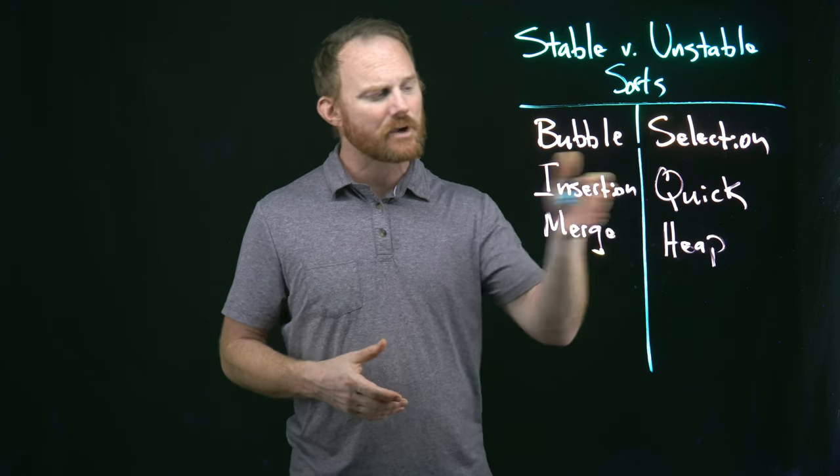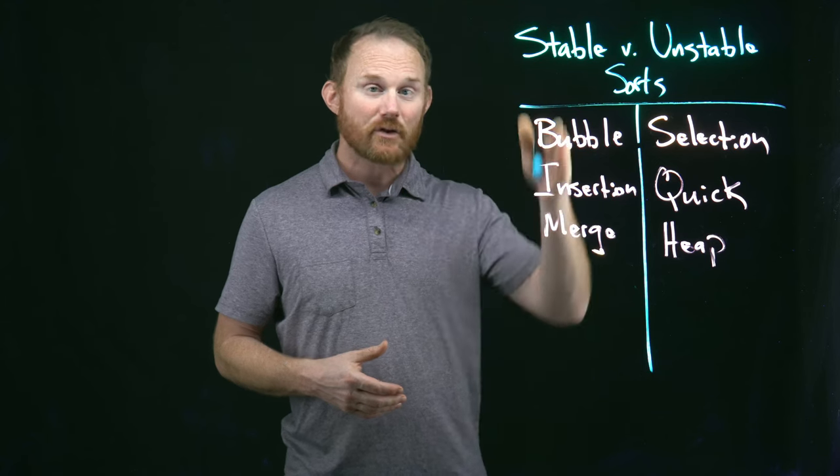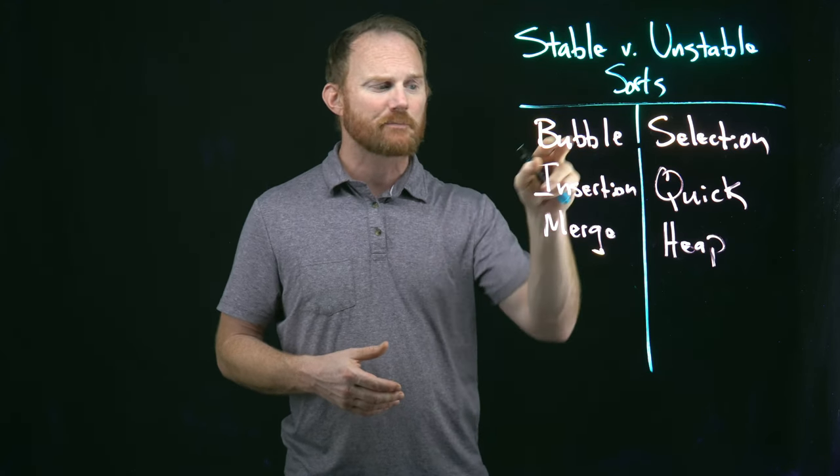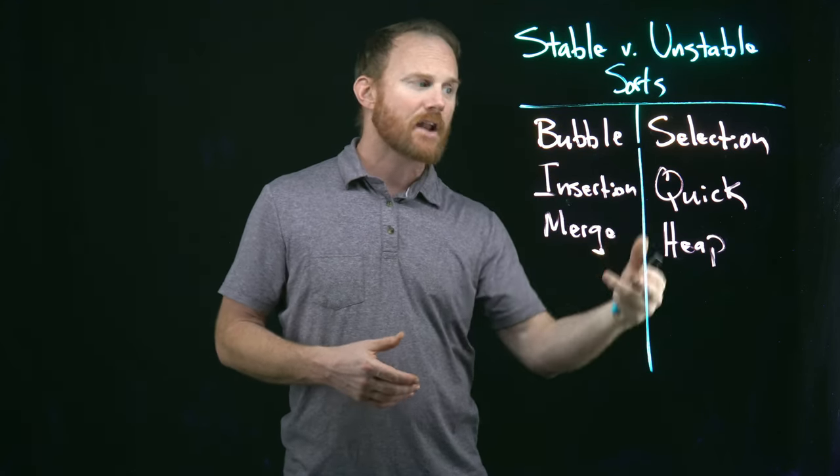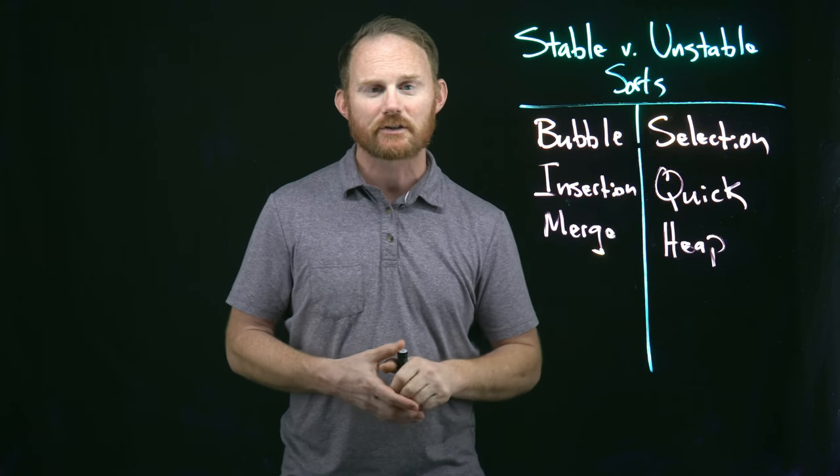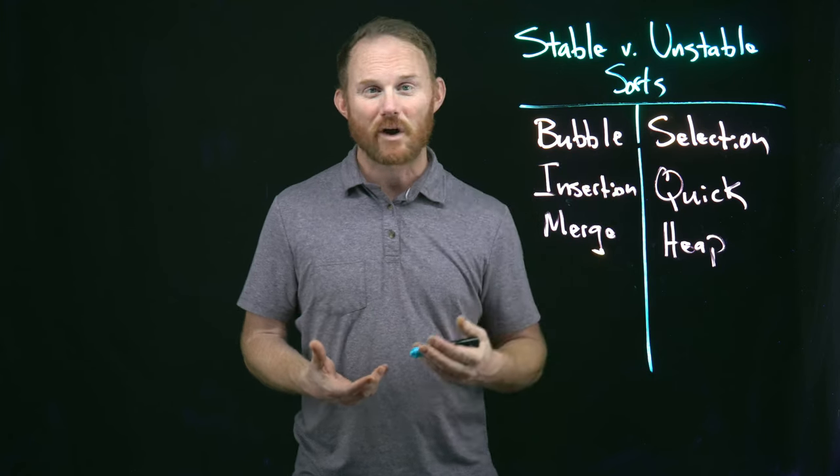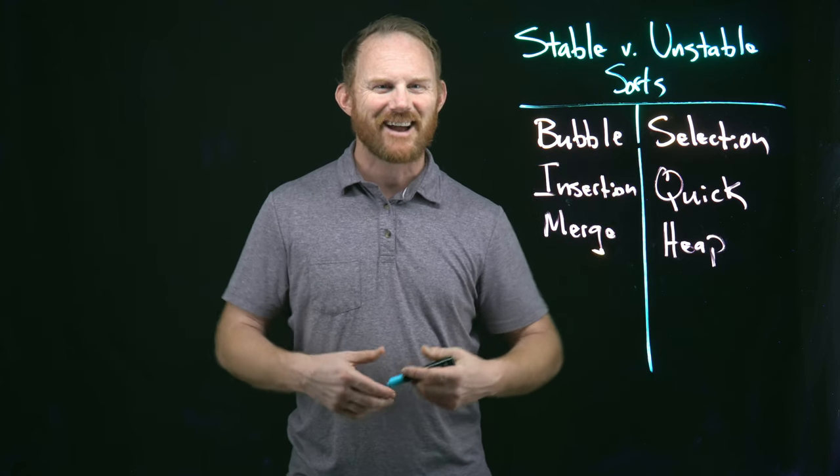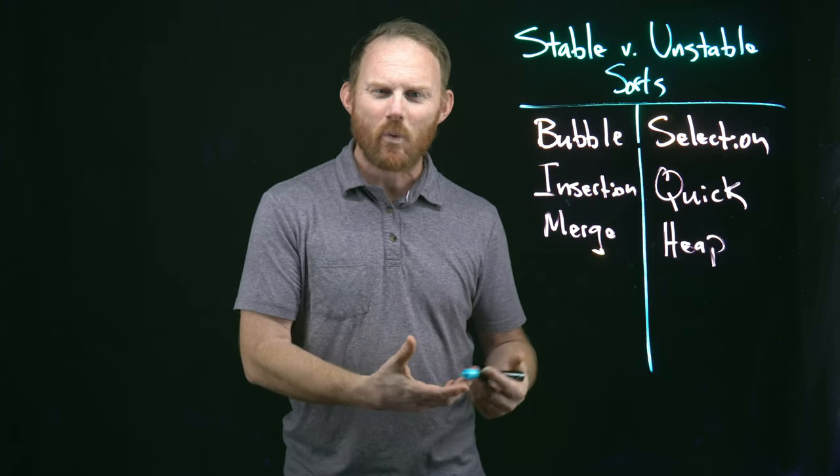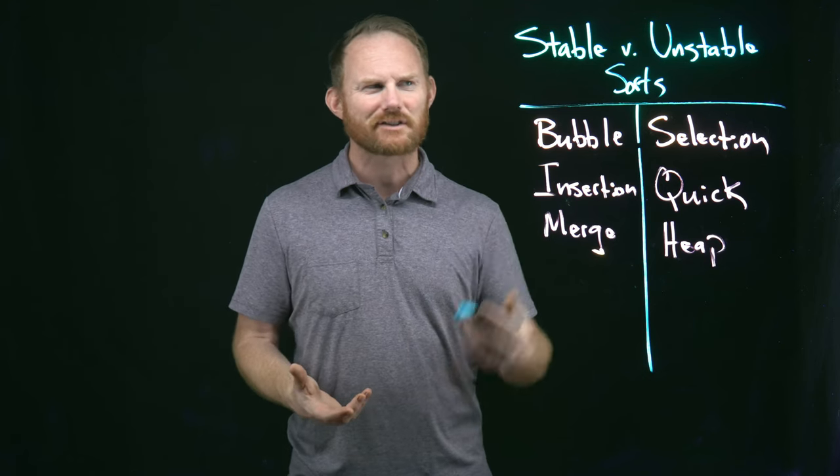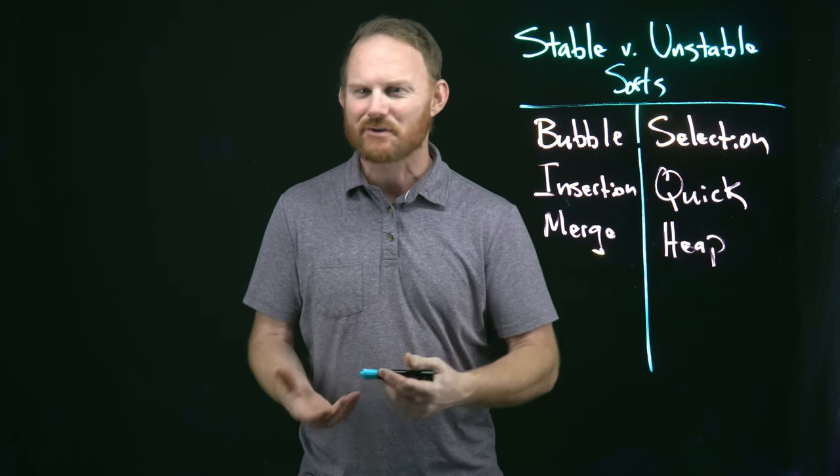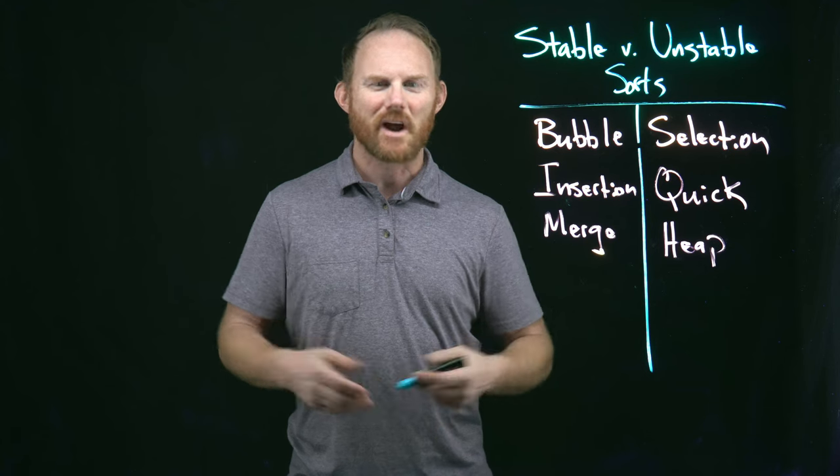I've got an example here on the left-hand side. These are three common stable algorithms: bubble, insertion and merge, and on the right, three common unstable ones. So the question is, when is it okay to use an unstable one? Because that sounds bad. And two, even if it's okay, why would you want to use one? Because stable sounds good. Why not just use stable if you can? We'll try and answer both of those.